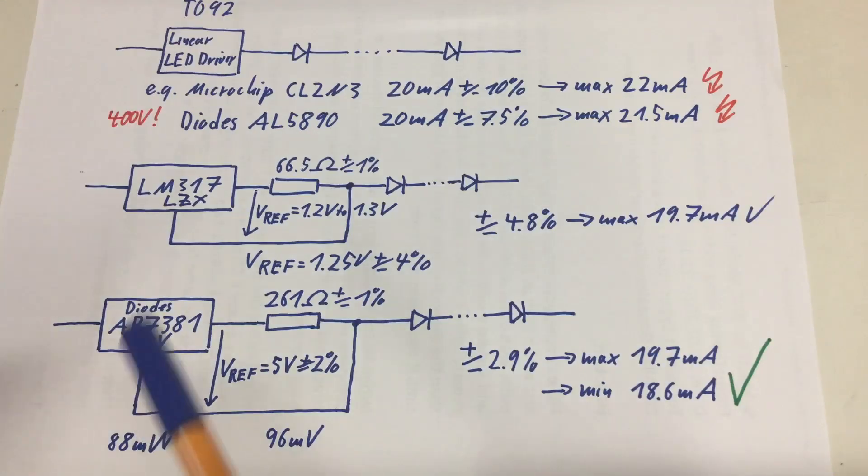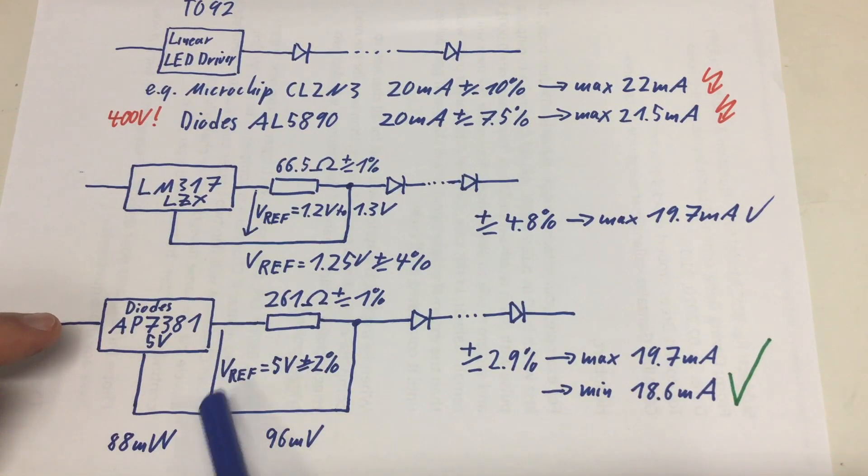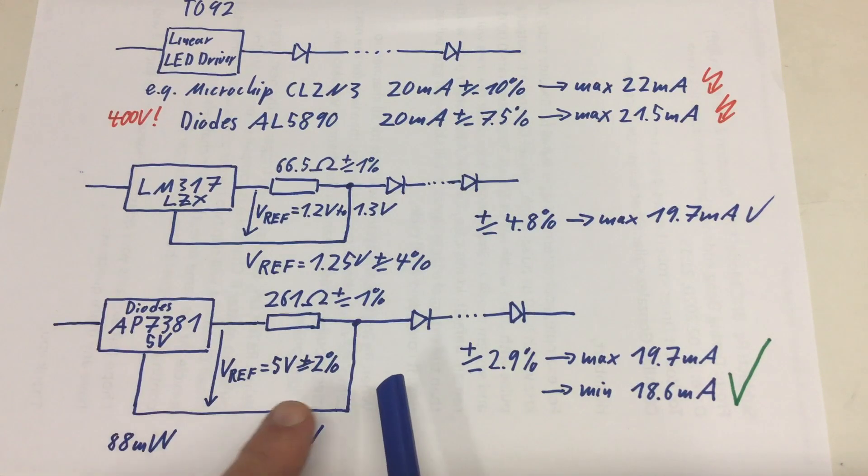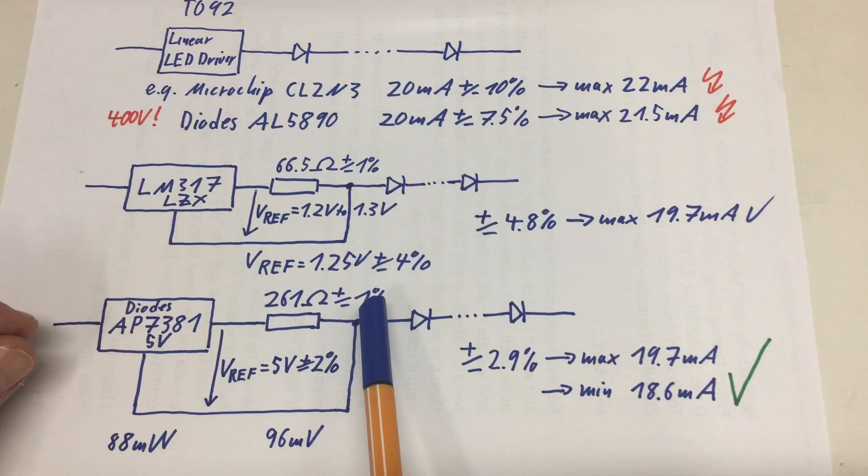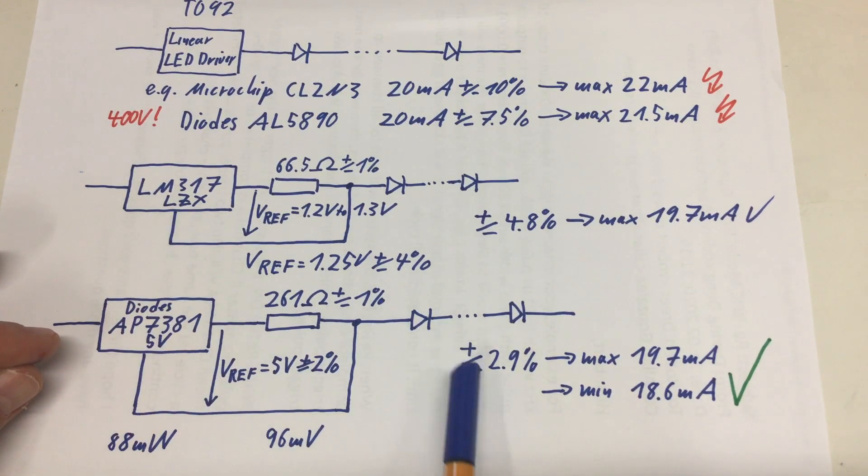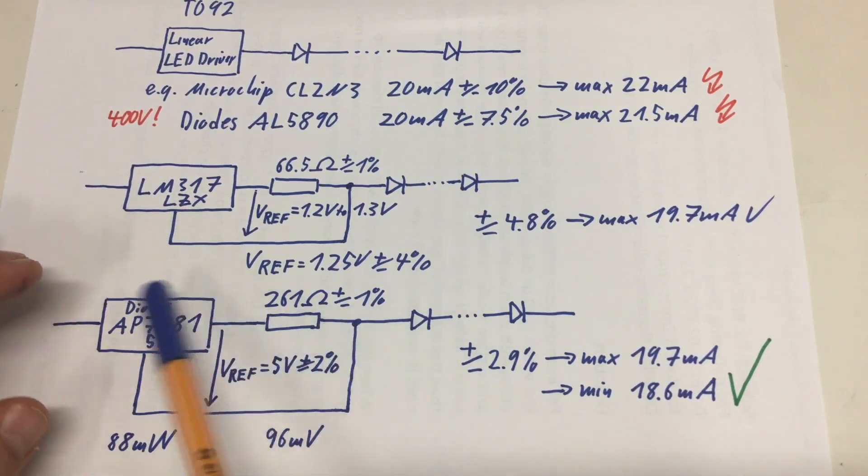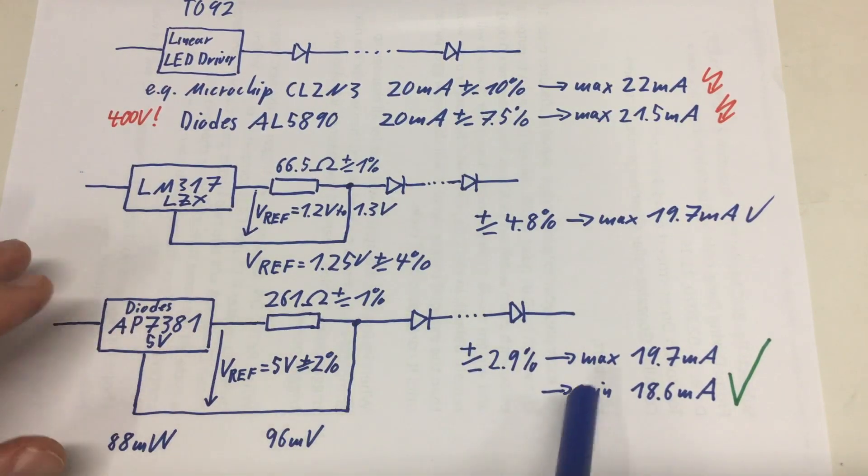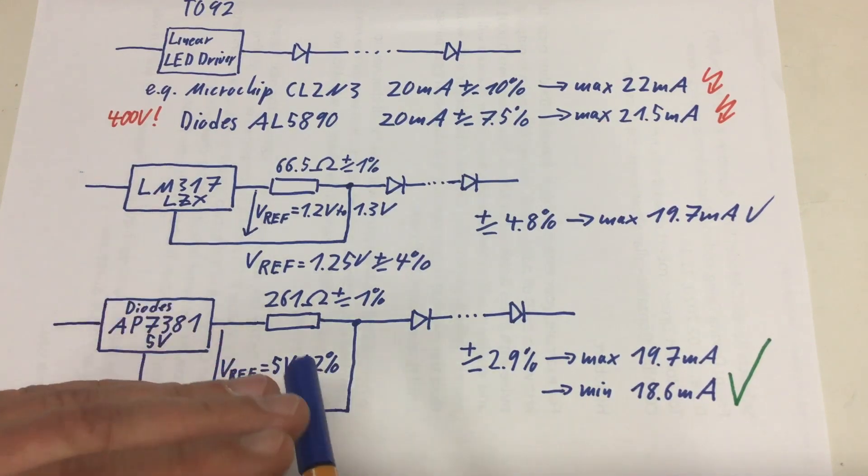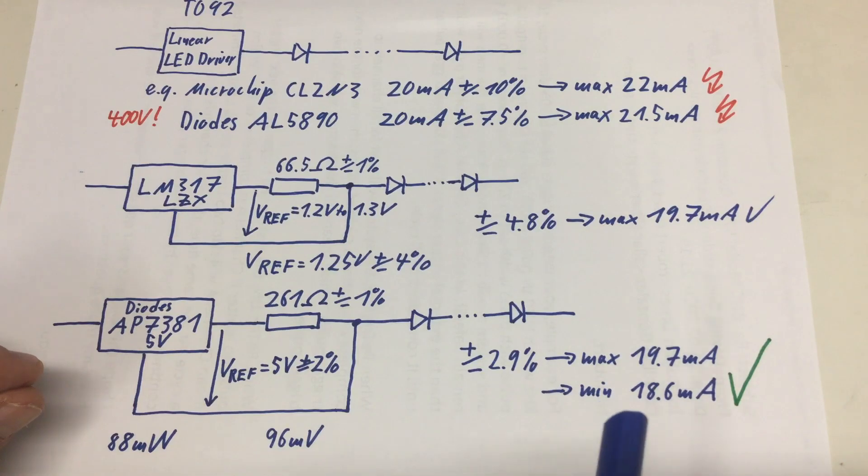I dug a little bit deeper and I came up with the diodes AP7381 5 volt regulator, which has an internal voltage reference of 5 volts plus minus 2%. Give that in series a 261 ohm resistor plus minus 1%, and you end up with a constant current of plus minus 2.9%, so a maximum of 19.7 milliamps and a minimum of 18.6 milliamps. I did a lot of parametric search for cheap, simple, small voltage regulators, and that was the best I could come up with. If you want more precision, more parts, more money. But that should suffice, I guess. Let's build that up.